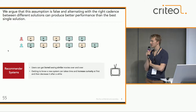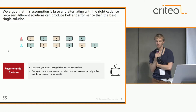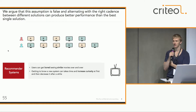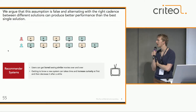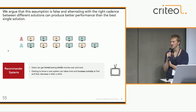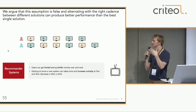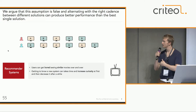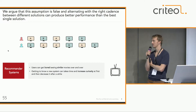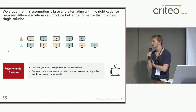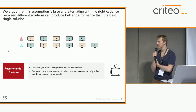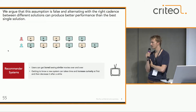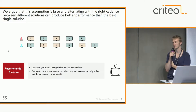Here we argue that this assumption is false, and there is an impact of past actions on future action performance. So there is an optimal cadence of the different actions that we have to find in order to have better performance. This kind of behavior can happen in different applications, but here we are going to focus on the application in the recommender system.